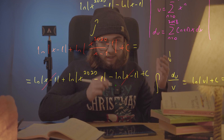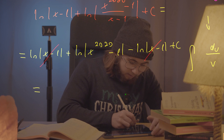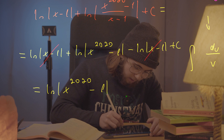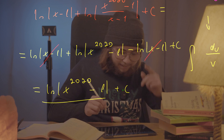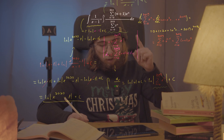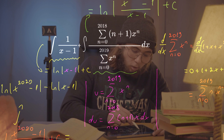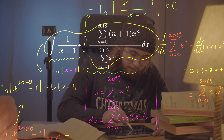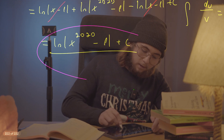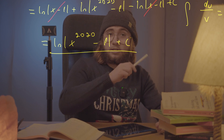Those two natural logs of x minus one cancel each other out. What we're left with in the very end is just the natural log of x to the power of 2020 minus one, plus a constant. And this is exactly the antiderivative we were looking for — this integral evaluates to the natural log of x^2020 minus one plus a constant. Hope you guys enjoyed it, see you next one!